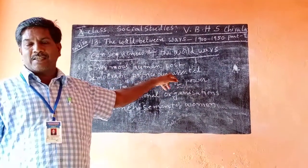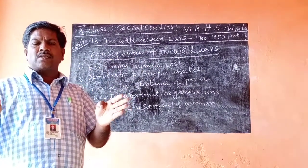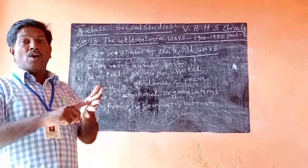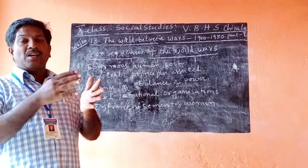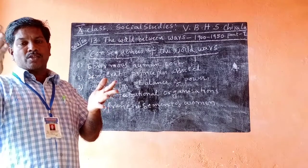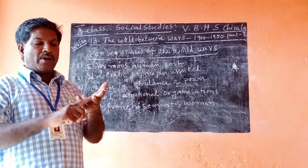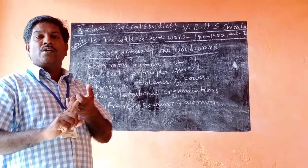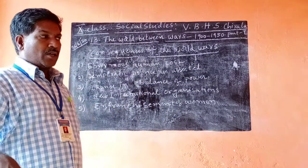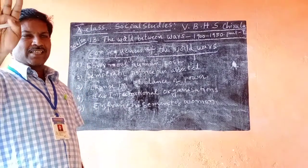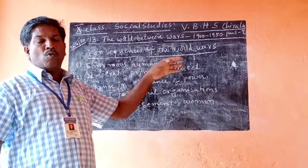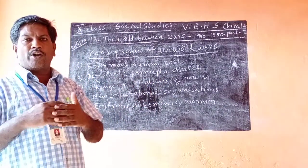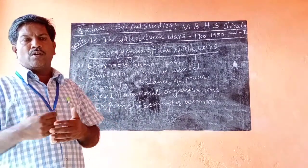The second consequence: democratic principles asserted. Several empires were completely ruined — for example, the Austro-Hungarian Empire, the Russian Empire, and the Ottoman Empire were all completely ruined. In place of the Ottoman Empire, Turkey as a democratic state was established. The Austrian Empire was completely ruined, and Austria became a separate state. Russia established a socialist state, and the Tsarist Empire collapsed. So new democratic principles were asserted, new states were born, and some nations gained independence.